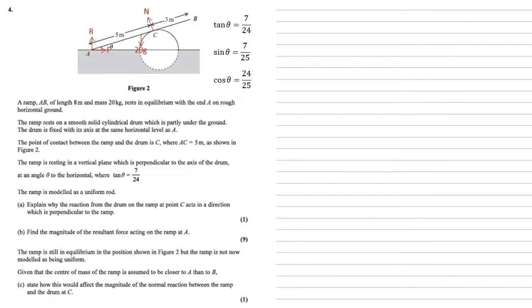For part C, the ramp is still in equilibrium in the position shown in figure 2, but the ramp is not now modeled as being uniform. Given that the center of mass of the ramp is assumed to be closer to A than to B, state how this would affect the magnitude of the normal reaction between the ramp and the drum at C.